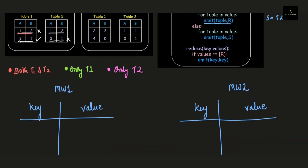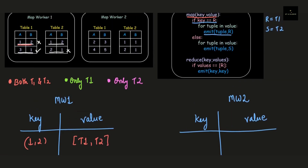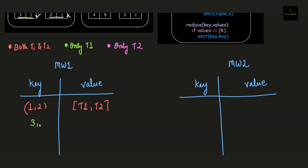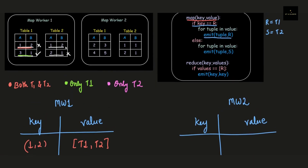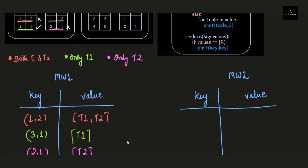The record 1,2 is present in both table 1 and table 2, so we give it coral color. The key is the tuple 1,2 and the value is a list containing t1 and t2. The next record 3,1 is only in table 1, so we write it in green with value t1. The record 2,1 is only in table 2, so we give it pink color. That completes map worker 1.